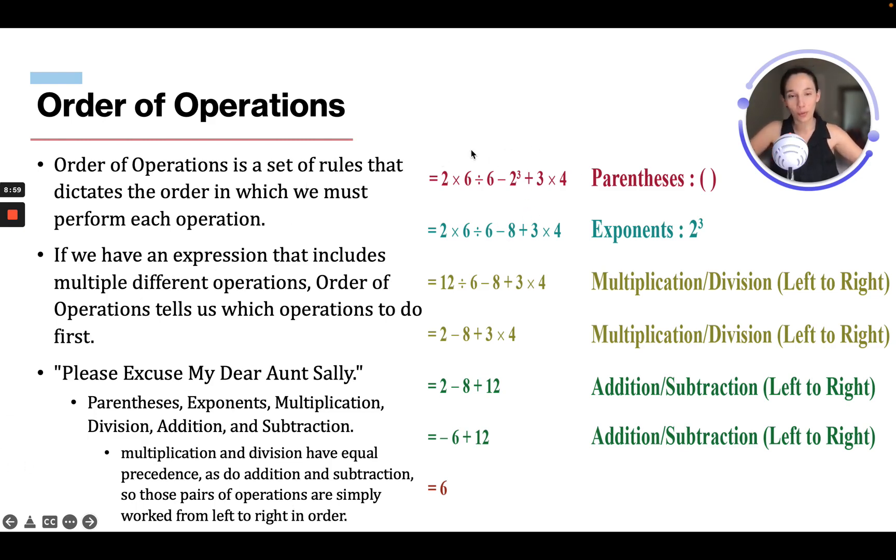So if we look at this equation, the first thing we're going to do is exponents, right? So right here. So 2 to the third is going to be 2 times 2 is 4 times 2 is 8. So we change that to 8.